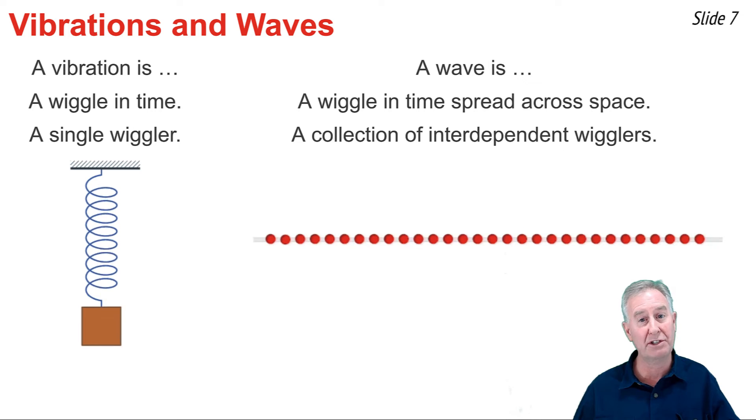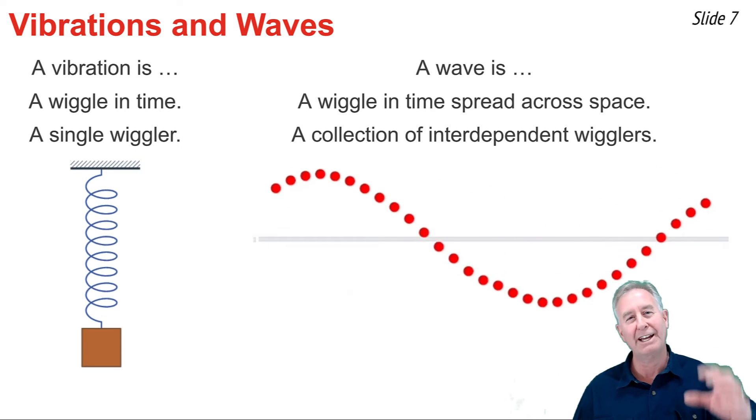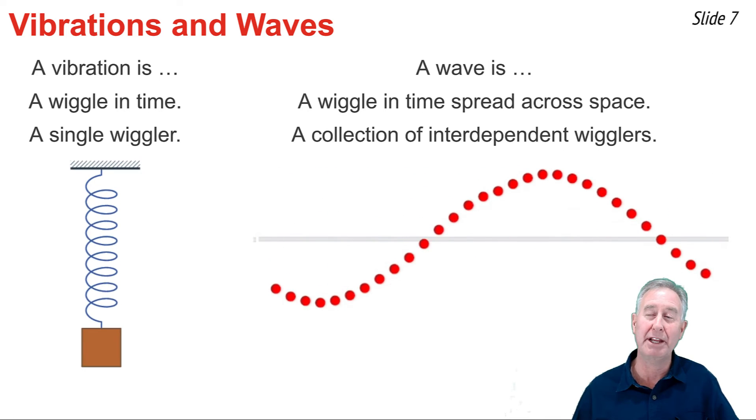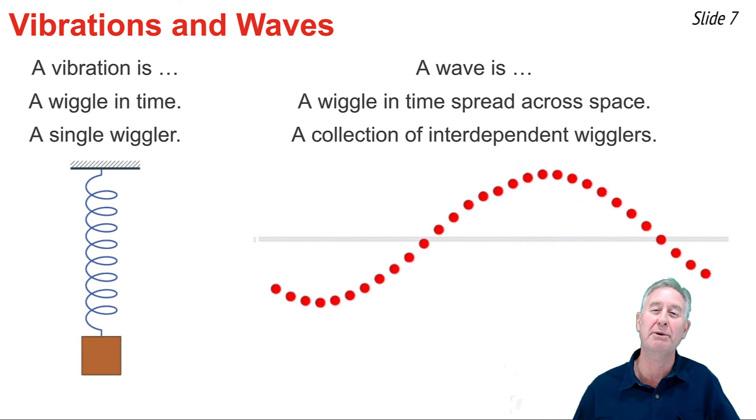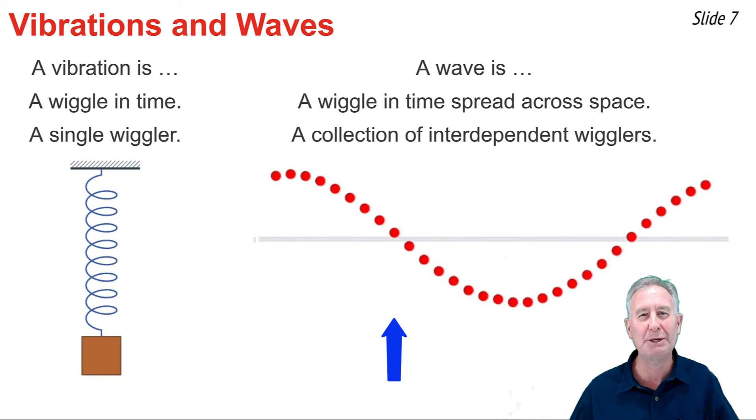You have a wiggle in time that extends itself through space because you have a multiple number of wigglers. To illustrate this, consider the animation here. Suppose that that first object is the coil of a snakey and I take it with my hand and I vibrate it up and down. As it vibrates up and down, it will cause the second coil to vibrate up and down, which will cause the third coil to vibrate up and down, the fourth coil to vibrate up and down, and so on and so forth. What you have is a collection of interdependent wigglers, a wiggle in time that extends itself through space. You can convince yourself of this if you just focus on one of the coils, or one of the objects in the animation, like the one denoted by this blue arrow. And watch what that object does. It's simply doing the back and forth, a wiggle in time. But because these wigglers are interdependent, we have a wiggle in time, extended through space.